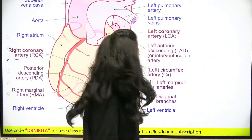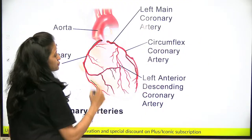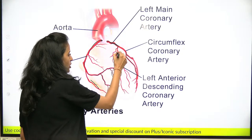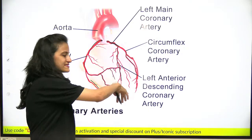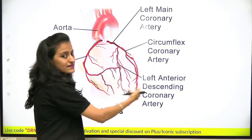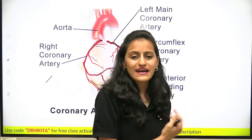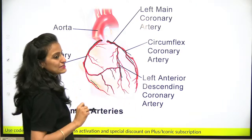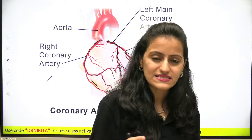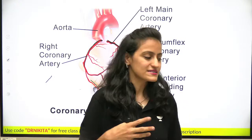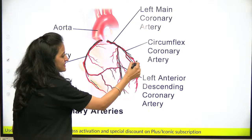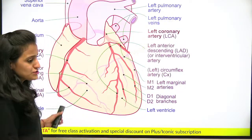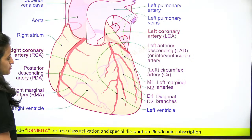We have the right coronary artery and the left coronary artery. The left coronary artery bifurcates into the left anterior descending artery — going anteriorly and descending down — and the circumflex, which goes posteriorly around the circumference. You must have heard the term triple vessel disease: when all three main vessels are affected — the right coronary artery, the left anterior descending, and the left circumflex.